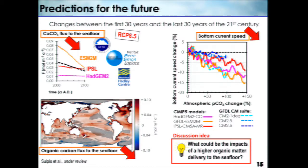Another variable is the bottom current speed — bottom currents will actually slow down. These are results from six different models; this is a world average going to roughly year 2100 and a bit further in time. All models I've tried show bottom currents that are slowing down. It's especially important in the north Atlantic, where we can actually measure some of that slowdown right now. These changes are pretty small, but locally they can be important, tending to increase the thickness of that diffusive boundary layer.